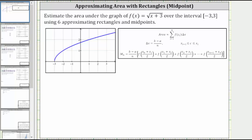We're asked to estimate the area under the graph of f(x) equals the square root of the quantity x plus three, over the closed interval from negative three to positive three, using six approximating rectangles and midpoints.